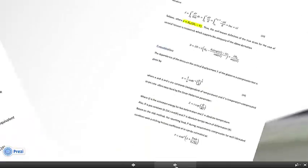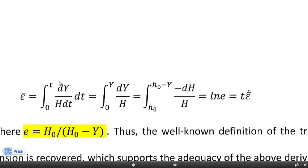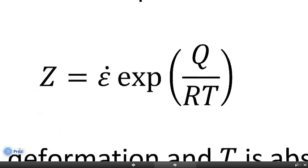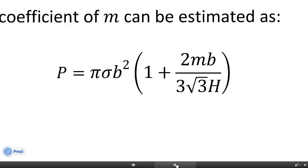If we integrate the strain rate through a streamline we can work out the total effective plastic strain, which is proportional to the strain rate multiplied by the elapsed time. Because compression testing is typically for hot characterization, we introduce an empirical constitutive equation that takes into account temperature variation with activation energy — the Zener-Hollomon parameter. This gives the typical correlation between compression force, stress, instantaneous geometrical parameters D and H, and friction coefficient M.